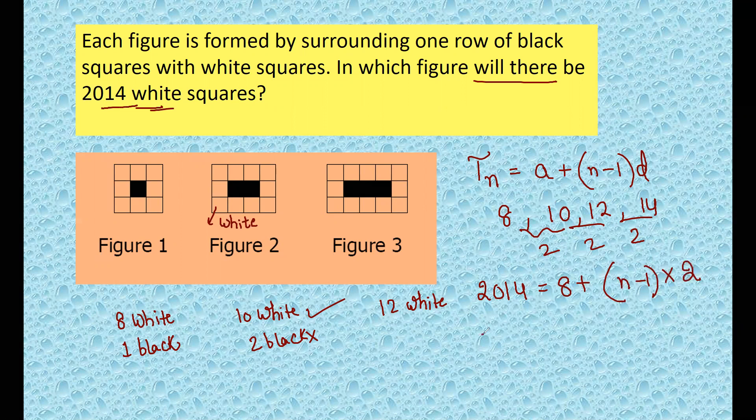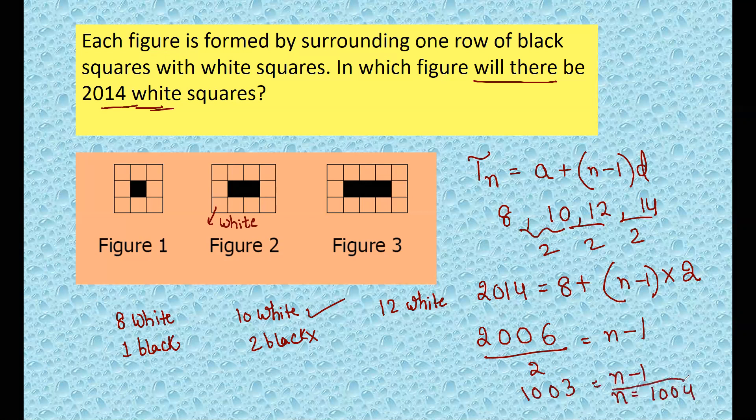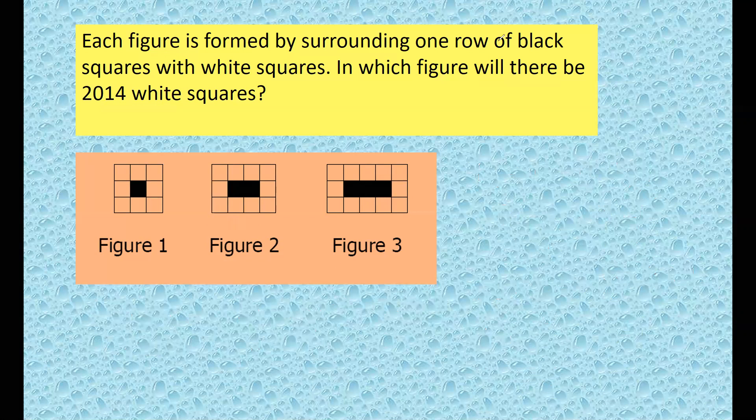So just subtract: 2006 divided by 2 equals n minus 1. So 1003 equals n minus 1, so n is 1004. Very easily you can get to the solution, just application of AP series. Let's go to next question.